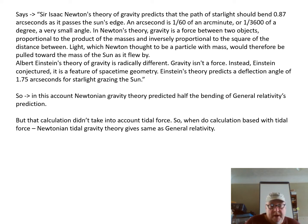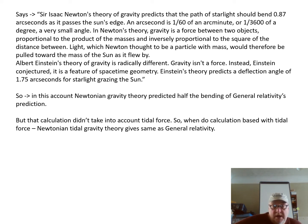Newton's theory predicted that starlight passing the sun's edge should bend by 0.87 arc seconds — light, which Newton thought to be a particle of mass, would be pulled towards the sun as it flew by. Einstein's theory predicts a deflection angle of 1.75 arc seconds. In this account, Newtonian gravity theory predicted half the bending of general relativity's prediction because the calculation did not take tidal force into account. When the calculation is done including tidal force, Newtonian tidal gravity theory gives the same result as general relativity.